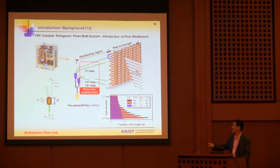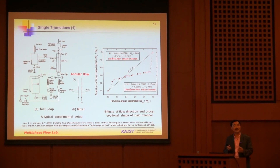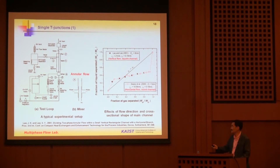Let's start with the single T-junction case. In evaporators and many heat exchangers, even with low quality at the inlet, the flow has very high void fraction. That means the flow pattern easily becomes annular flow or annular mist flow. This is a typical experimental setup: liquid is supplied from one side and air or vapor from another, annular flow is formed, and then flows through the test section through the main.